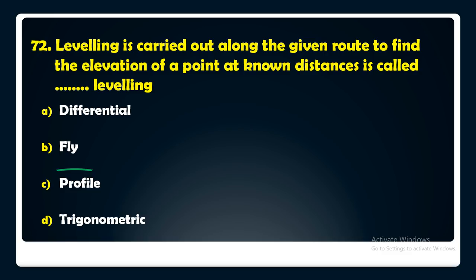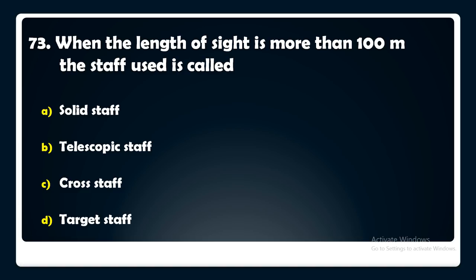When the length of a sight is more than 100 meters, the staff used is called — solid staff, telescopic staff, cross staff, or target staff? The answer is: when the length of sight is more than 100 meters, the staff used is a target staff.